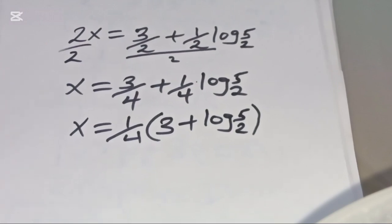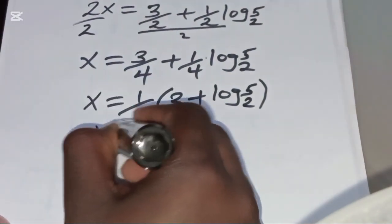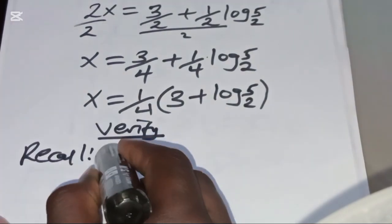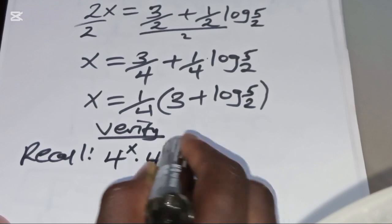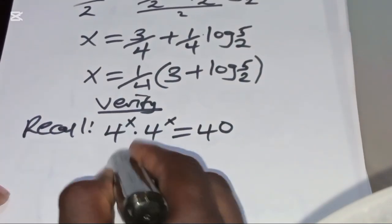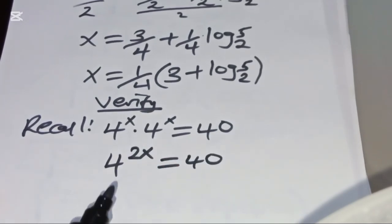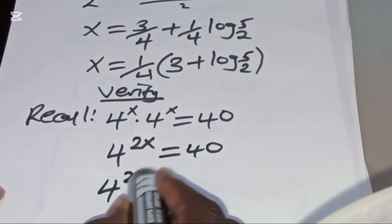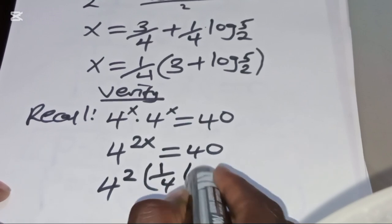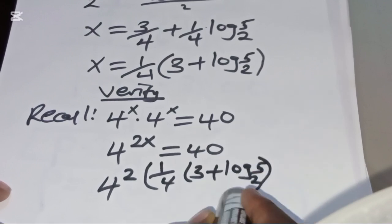Now let's verify that this value of x satisfies the equation. Recall that 4^x × 4^x = 40, which simplifies to 4^(2x) = 40. Substituting x = (1/4)(3 + log₂5), we have 4 to the power of 2 × (1/4)(3 + log₂5) = 40.